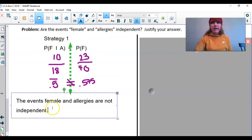We show our work right here, and we state if they are independent or not independent. Because they are not equal, they are not independent. That's strategy one.